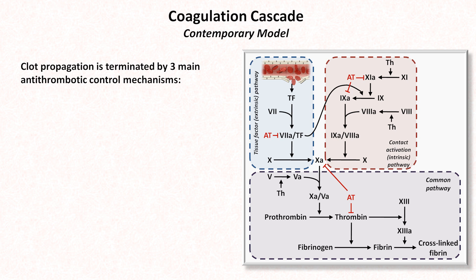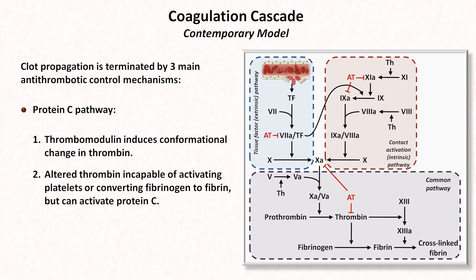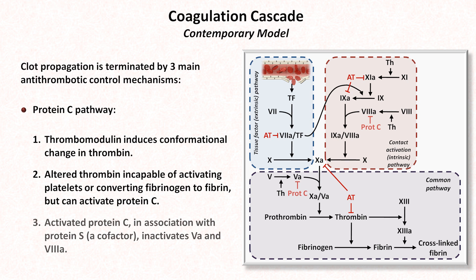The second antithrombotic control mechanism is the protein C pathway. An integral membrane protein of the endothelium called thrombomodulin induces a conformational change in thrombin. The altered thrombin is incapable of activating platelets or converting fibrinogen to fibrin, but can now activate a proenzyme called protein C. Activated protein C, in association with its cofactor protein S, inactivates factors 5 and 8, inhibiting the function of the prothrombinase and intrinsic factor tenase complexes respectively.